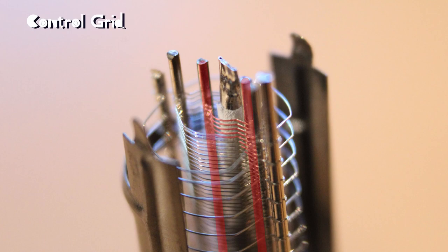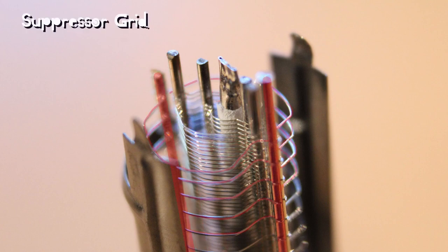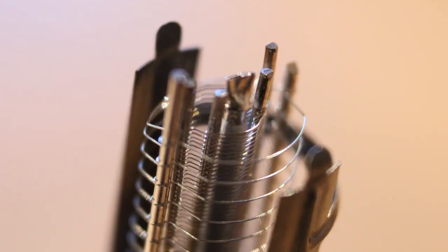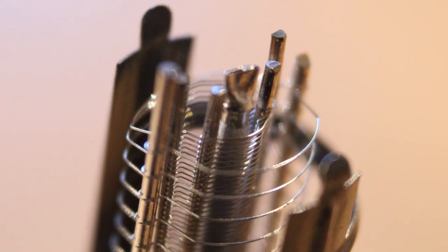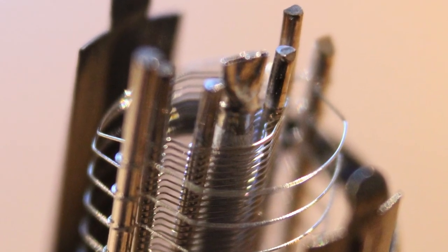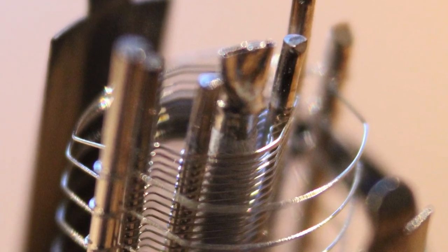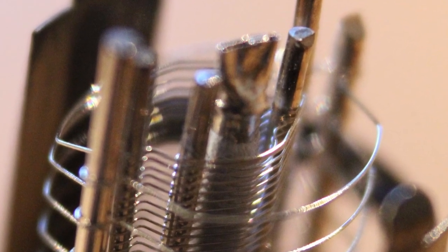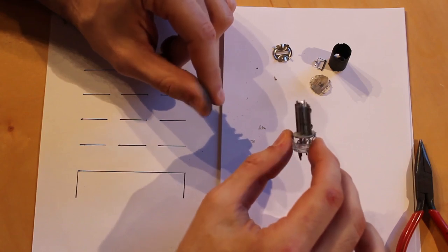You can see the cathode right in the center and then the control grid is so tightly wound around it. I can't actually see it. I have to look at it through this macro picture. Unbelievable. And then the screen grid is a little looser around the control grid but it's still pretty tight and then we can see the very loosely wound suppressor grid around the outside. What an absolute gorgeous tube. You can see I got it a little bent coming apart but I mean you can still very clearly see all three grids going on here. What a beautiful beautiful tube.